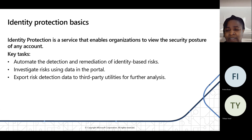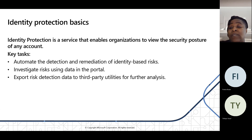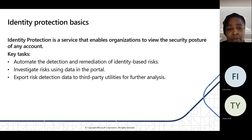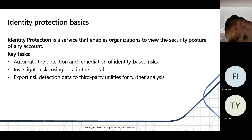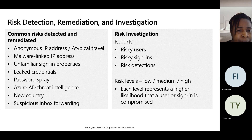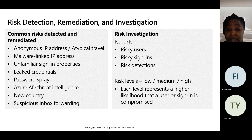Identity Protection also helps you investigate risk — you can see the fingerprints of a threat: the IP address, the country it's coming from, the device, and which user it's tied to. You can export these risks to third-party SIEM solutions. Organizations using non-Microsoft SIEM can take these events and feed them into their dashboards in their SOC centers. Common risk detections include anonymous IP — a sign that someone may be masquerading their IP address.